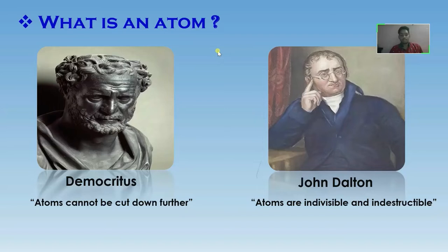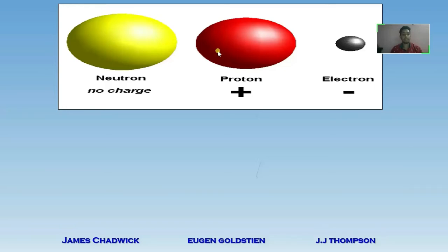Later on, these theories and hypothesis were proven wrong by some other scientists. Do you guys want to know how the discovery of fundamental particles of atom, that is neutron, proton and electron, led to failure of Dalton's theory?